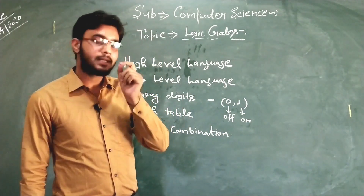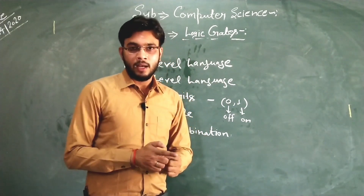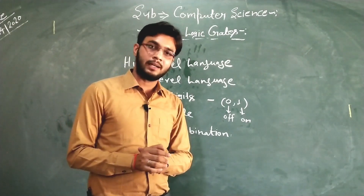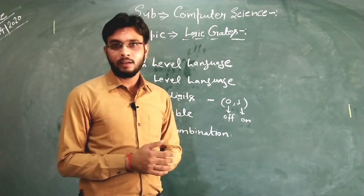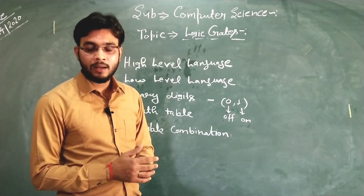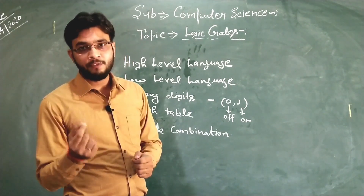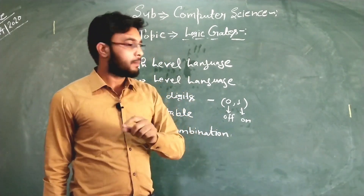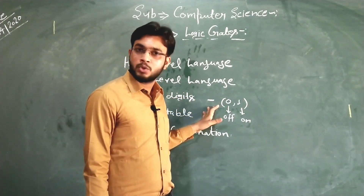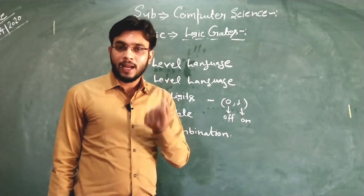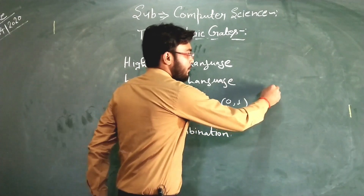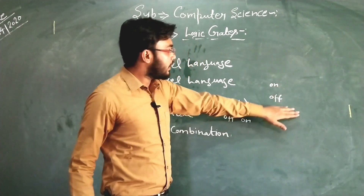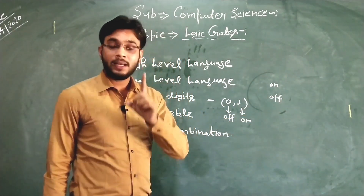For example, if there is a condition — 'it will rain today' — then how many outputs are there for this condition? There will be two outputs: the condition will be true or the condition will be false. According to a switch circuit, if there is a switch, we can either turn it on or turn it off — so two tasks can be performed by a single switch.